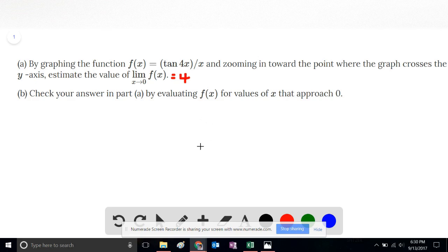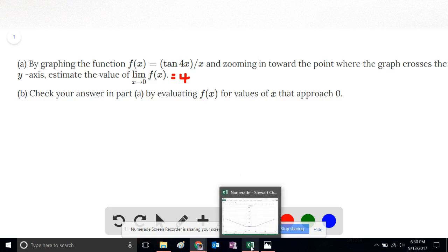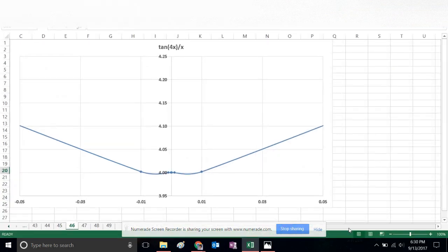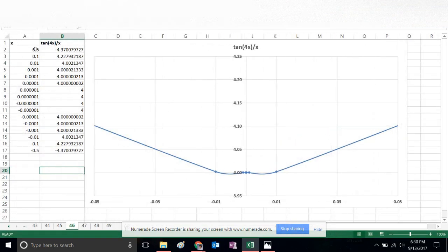Part B: Check your answer in Part A by evaluating f for values of x that approach 0. So we're going to refer to our spreadsheet, and we'll see that we used a table of values to plot this function.